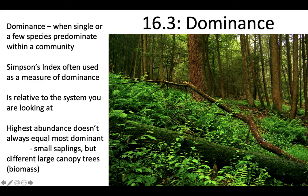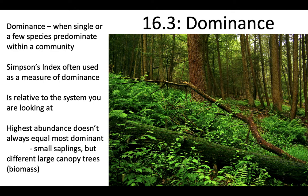For example, you could have a community where the biomass of small saplings on the forest floor actually outweighs the biomass of whatever species are in the tree canopies, just by sheer number of saplings. Or you could have the inverse, where you don't have a lot of trees but the biomass of the trees outweighs the biomass of the saplings on the forest floor.